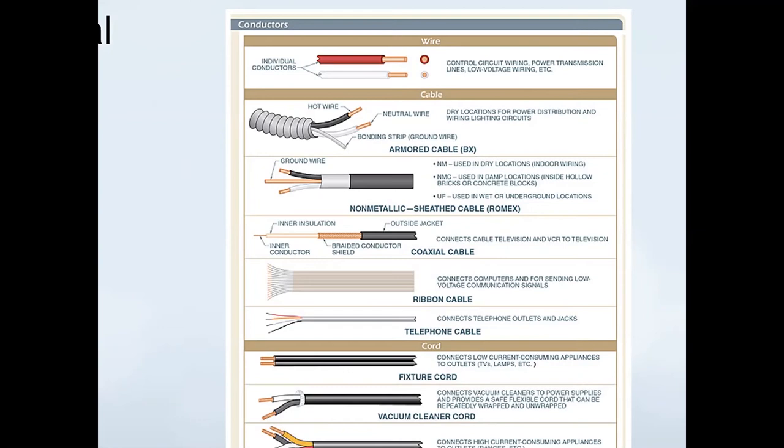Then we have the non-metallic sheath cable, or Romex. This is the type of wire that is used in the wall to connect outlets and lights and other devices back to your circuit breaker panel.